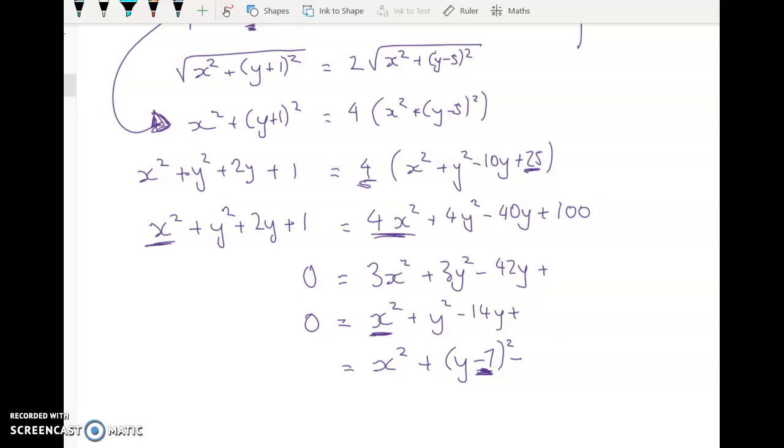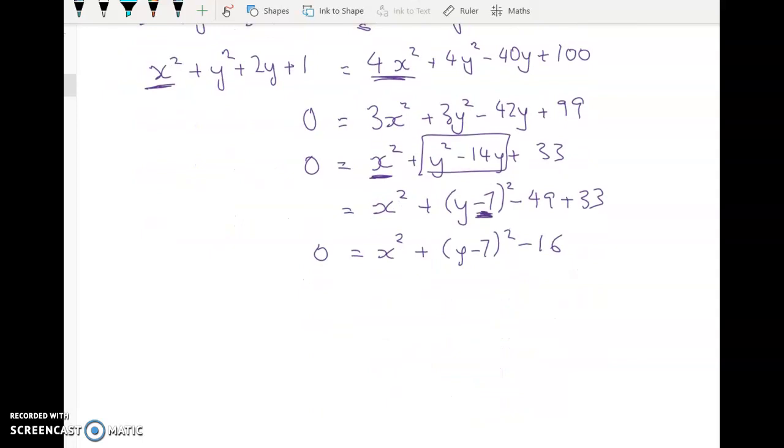Okay, 3x squared, 3y squared minus 42y plus 99. And here we get plus 33. So back to down here. So I'm doing completing the square on this. I've added in 49 by accident. So I take it out and I've got plus 33. That gives me 0 equals x squared plus (y minus 7) squared minus 16. And that gets us to our final answer, which is that 16 equals x squared plus (y minus 7) squared.